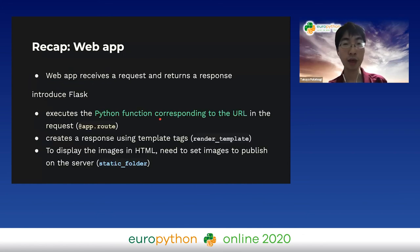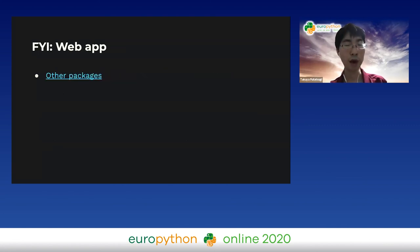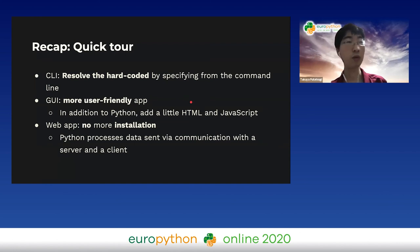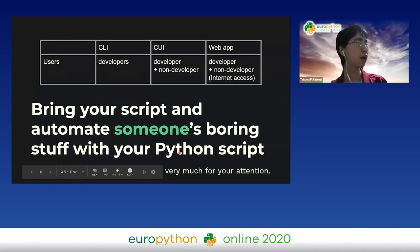Recap: a web app receives a request from a client and returns a response. Flask executes a Python function corresponding to the URL in the request and creates a response using template tags. In web apps, to display images in HTML, use the static_folder argument. For the full tour recap: in CLI, we removed hardcoding by specifying values from the command line. GUI apps are more user-friendly for non-developers. Web apps are available immediately upon internet connection with no installation needed.